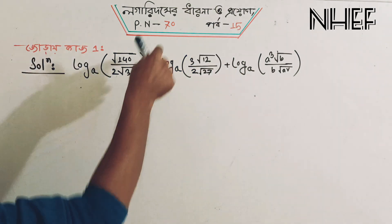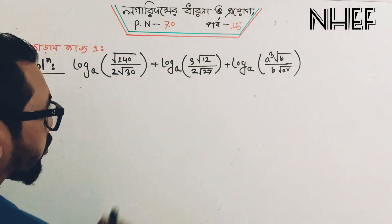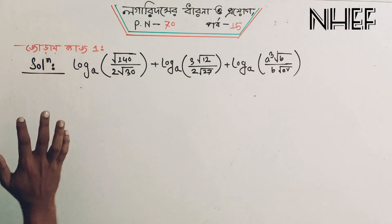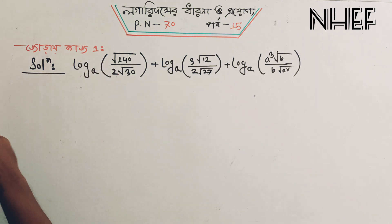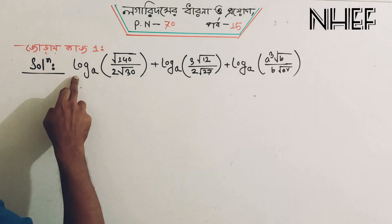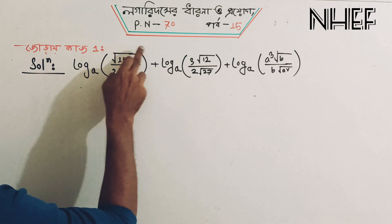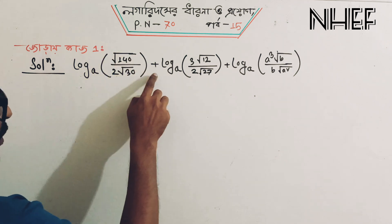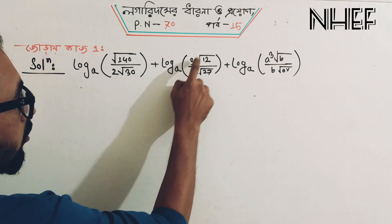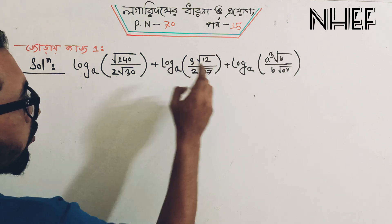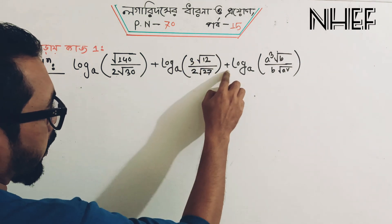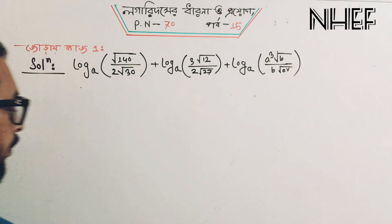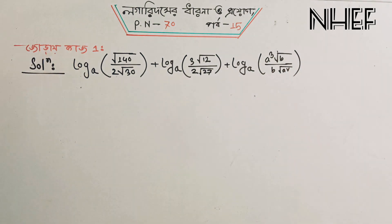We may have a negative 1 and a big 1. e is equal to 1 — we are at mathematics. The problem is: log base a of (root 1.4 divided by 2·root 30), plus log base a of (root 3·root 12 divided by 2·root 27), plus log base a of (cube root b times b·root s squared). Let's get started with this one.